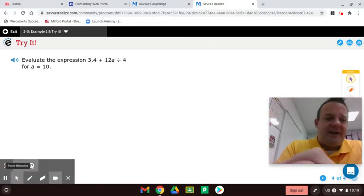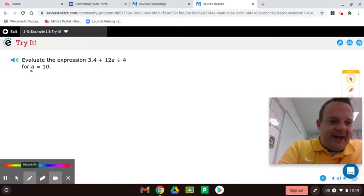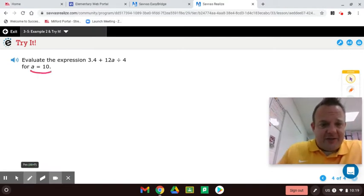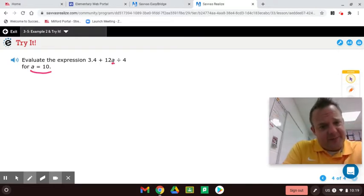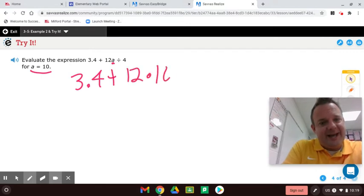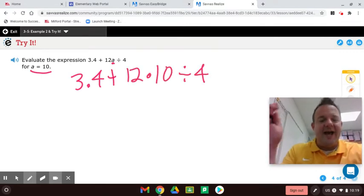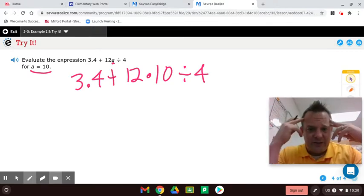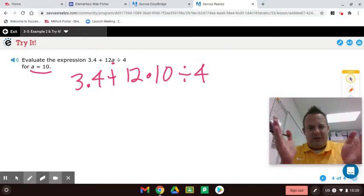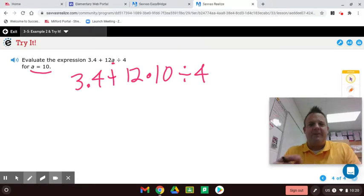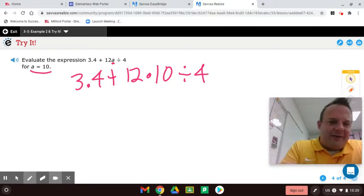Alright, so here we have an algebraic expression, and you will see that a equals 10. So the first step that you'll have to do, you'll get a lot of problems like this, is we're going to substitute 10 in for a. And it's coefficient variable, so that means multiply. So you're going to go 3.4 plus 12 times 10 divided by 4. So now this should look familiar. This is just the order of operations, and you're allowed to use a calculator, but you still have to show all the equivalent expressions going down as you simplify it down.